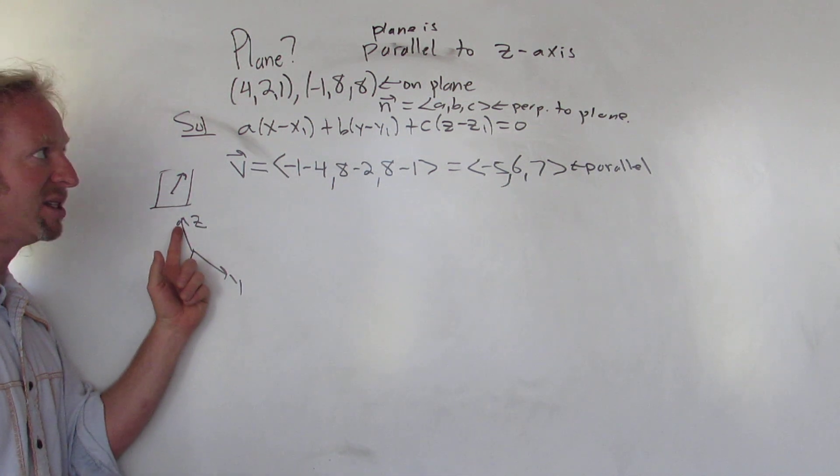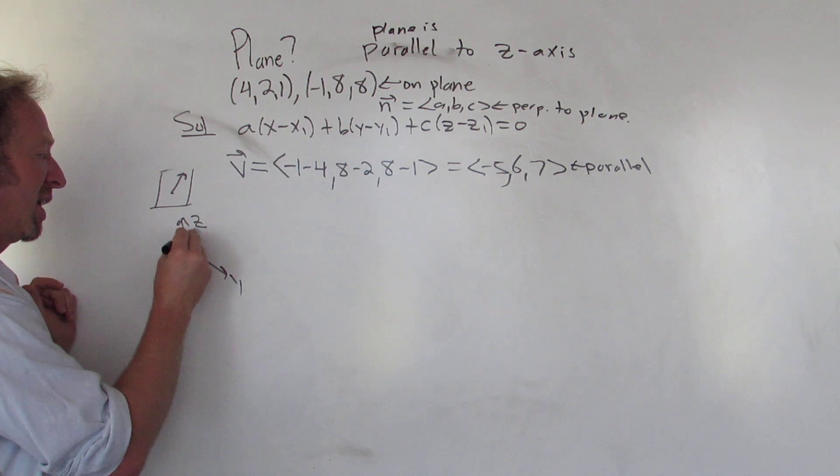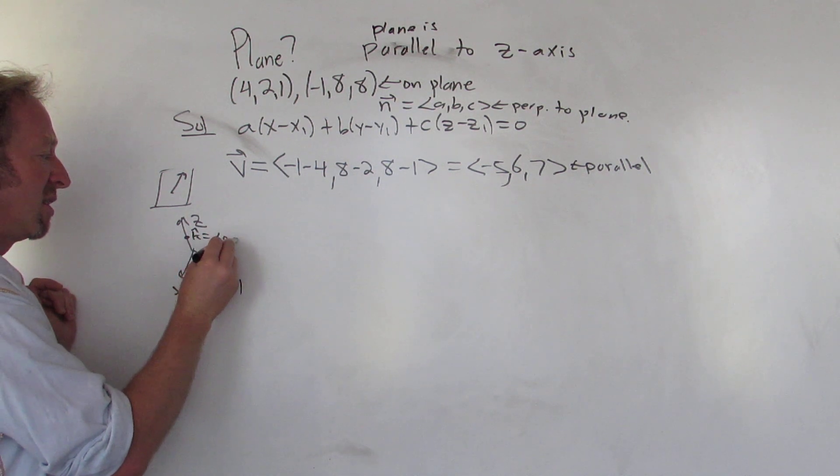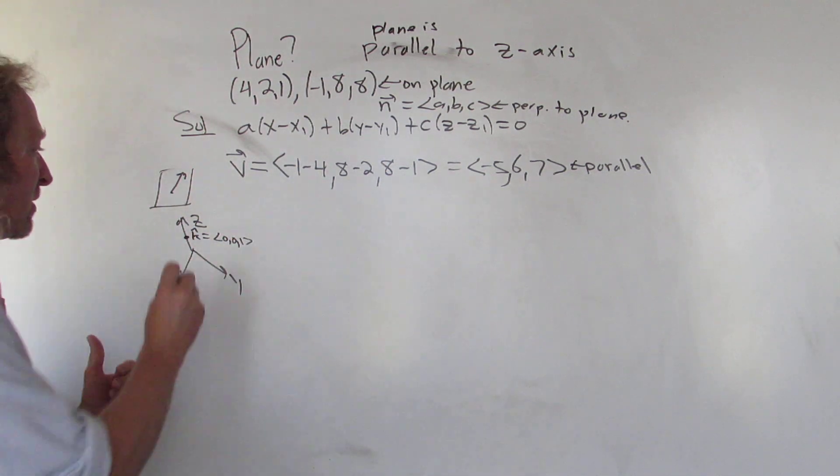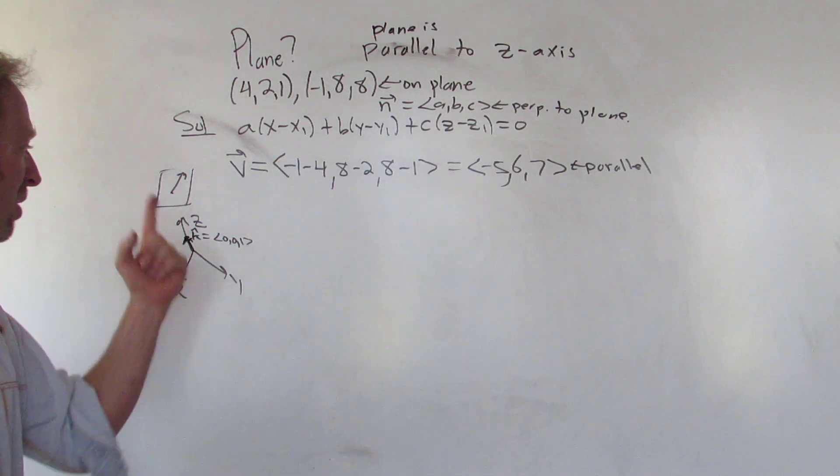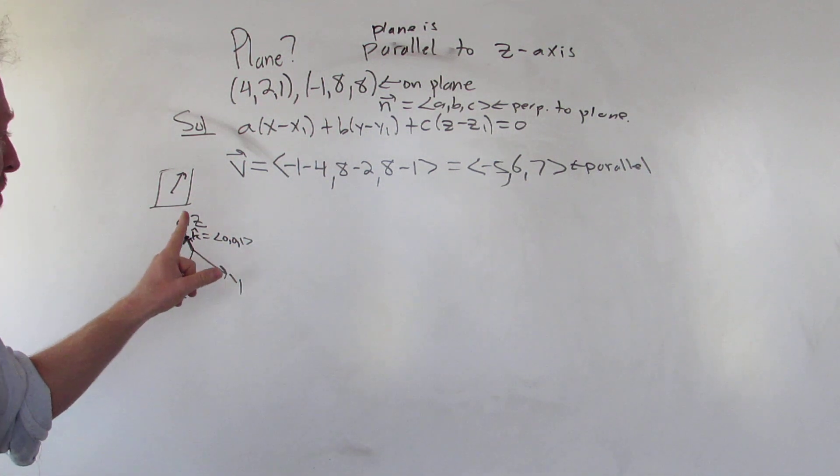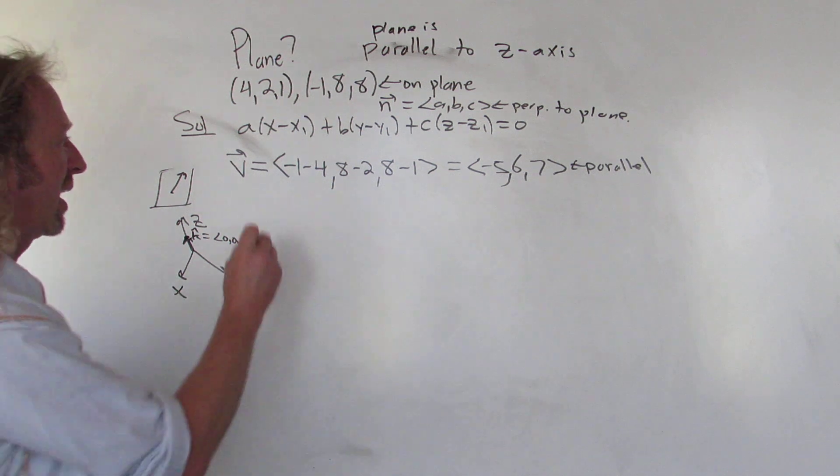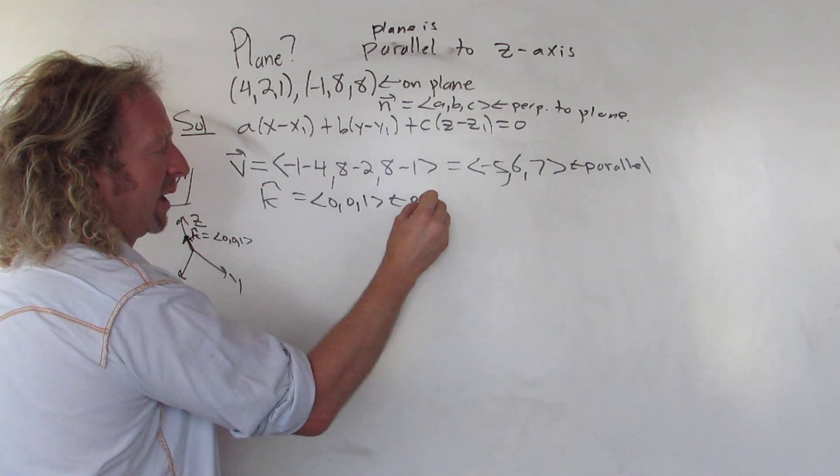We can get an orthogonal vector or a normal vector and that will be the abc. So let's think about that. We have a parallel vector here. Our plane is parallel to the z-axis. So I'm thinking of just k-hat. k-hat is this vector here. It's the standard unit vector. That's a little vector there, pointing straight up in the direction of the z-axis. So that vector is parallel to our plane.